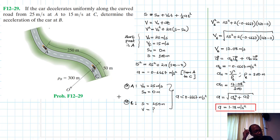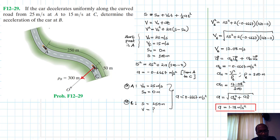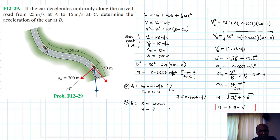I hope this video was helpful. If it was, give me a thumbs up, like the video, and continue subscribing. At point B, we have the centripetal component directed center-seeking, the tangential component along the curve, and the resultant acceleration a combining both components aₜ and aₙ. See you in my next screencast.